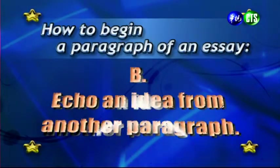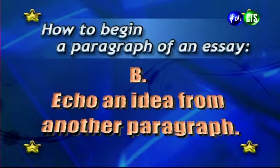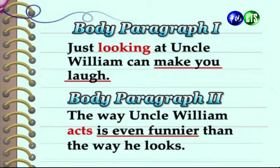Another strategy is to echo an idea from another paragraph. 下一個可以使用的策略，則是與其他段落的主題相互呼應。Here are two topic sentences from the writing model. 我們來看一下在寫作範例裡面的兩個主要的主題句。From body paragraph one, it says: 'Just looking at Uncle William can make you laugh.' 第一個看到的是在主題段落第一段，它提到說光是看著威廉叔叔就讓人想笑。